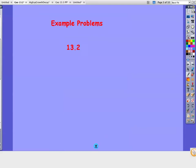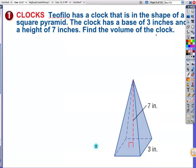We are now on example problems from section 13.2 and we have this clock that's in the shape of a square pyramid. The clock has a base of 3 inches and a height of 7 inches. Find the volume of the clock.